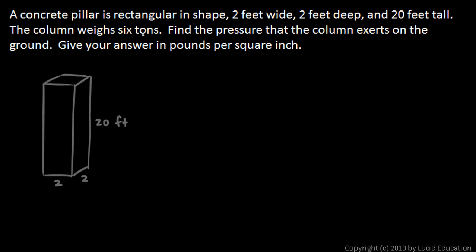And the column weighs six tons, and one ton is 2,000 pounds. So that tells you how much force from gravity is pushing down on the ground. Let's draw the hidden lines in here, and you can get a visual image of the bottom here. This is the bottom of the column, and the weight of the column is spread out over that area. So it's resting on the ground here.